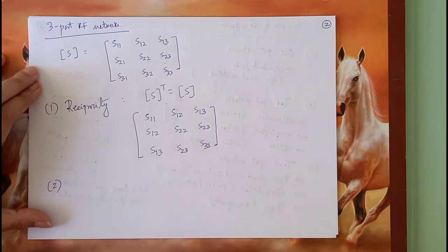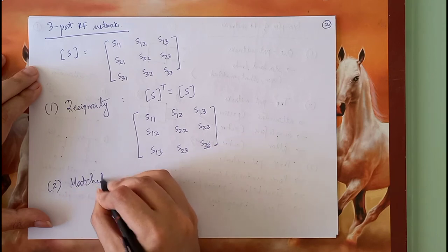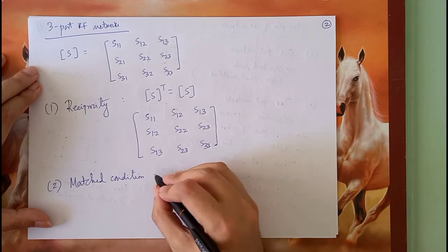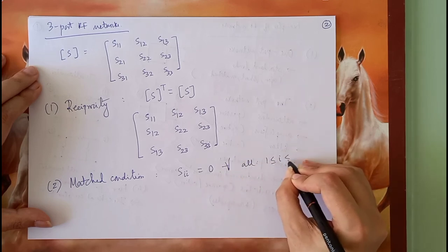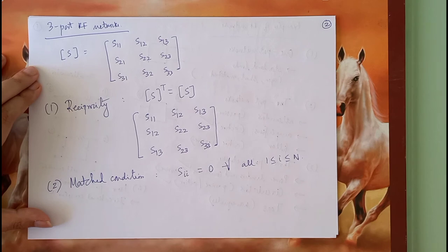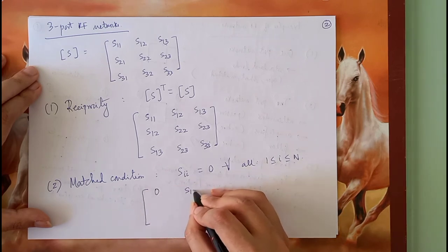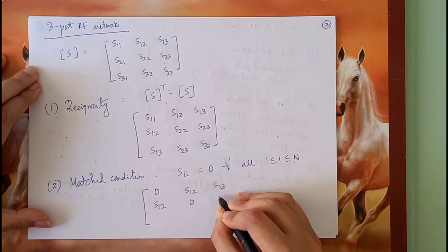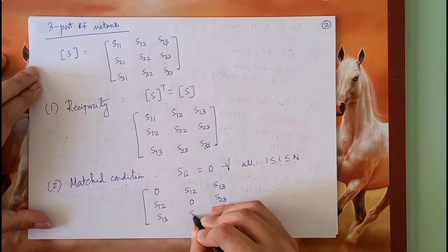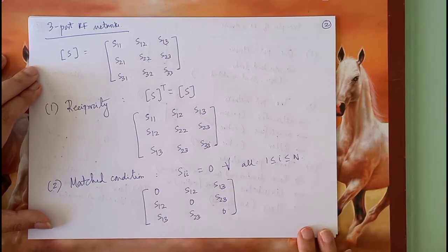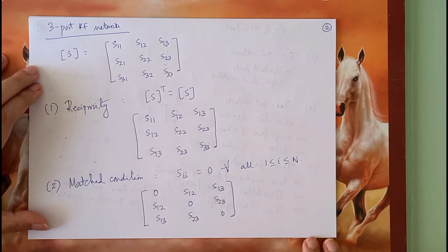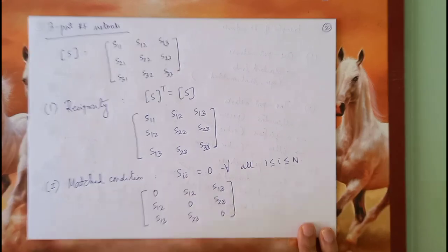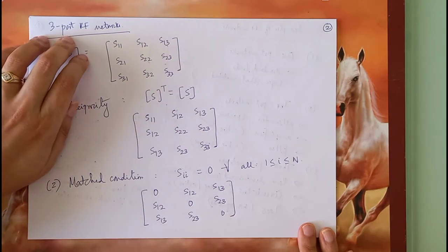Now let us put the matched condition, which is easy to apply. The matched condition is when S_ii equals 0 for all values of i from 1 to n. So all the diagonal elements will now become 0. Very easily we have achieved two of these three criteria. Now comes the third and also very important criterion: losslessness.